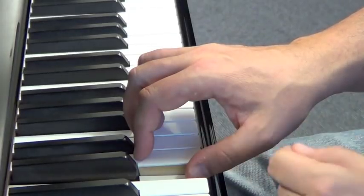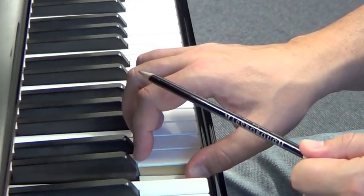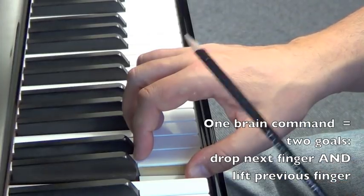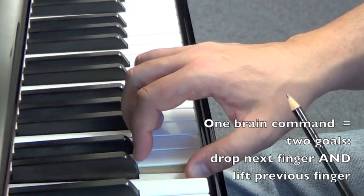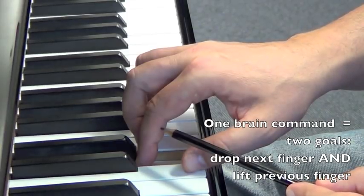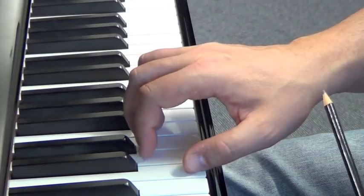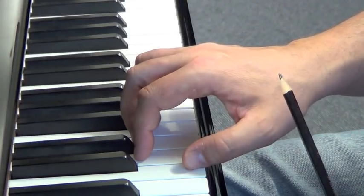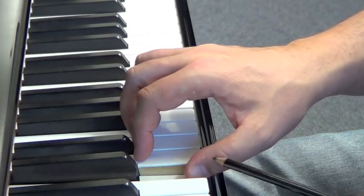We do that by sending one impulse to the hand saying lower this and raise this in one command. So instead of lifting this thumb and lowering the next finger, which results in silence, you're sending one instruction to the hand from the brain. You're saying in one go, lower this and lift this.